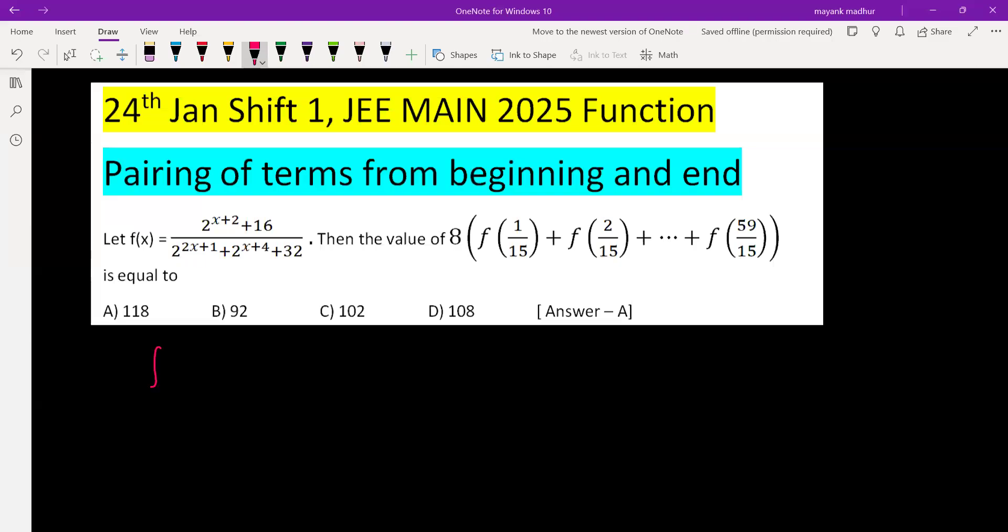Let f(x) equal 2 raised to x plus 2 plus 16 divided by 2 raised to 2x plus 1 plus 2 raised to x plus 4 plus 32. So here we have to simplify this.